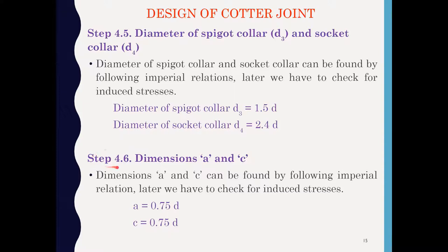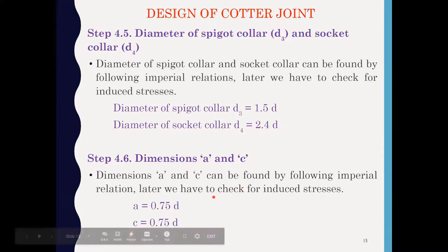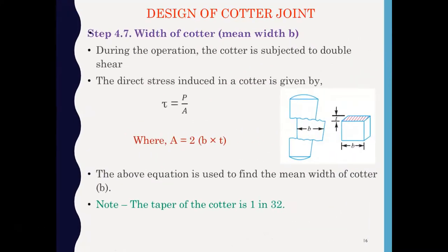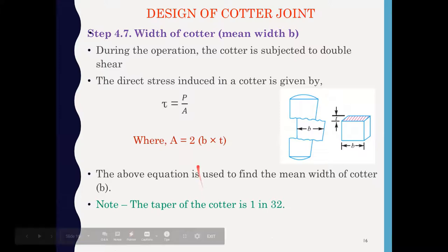The next step is to find dimensions A and C using empirical formulas: A = 0.275 × D and C = 0.75 × D. After finding the dimensions by empirical formula, we have to check those dimensions in the next steps.